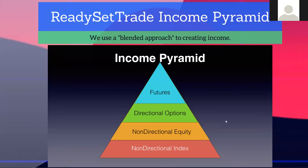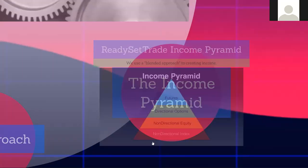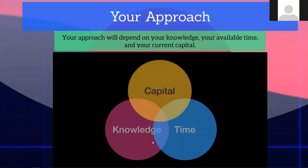The way we do this is through the income pyramid — a blended approach. Non-directional index trades are passive income trades; as we get up to directional options and futures, we use smaller amounts of capital because we're taking a little more risk. Everybody's going to have a different combination of capital, knowledge, and time available. Just because you have a seven-figure account doesn't mean you'll be any better. Smaller accounts aren't necessarily at a disadvantage if you get better every day.